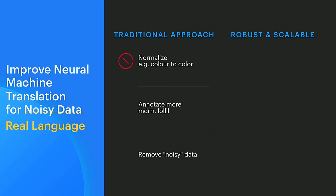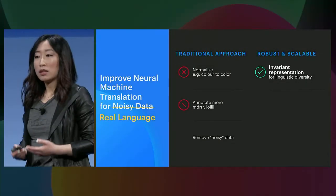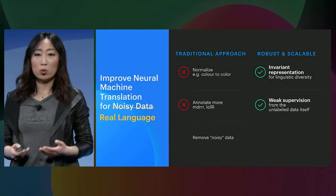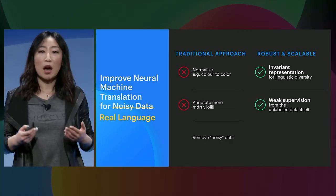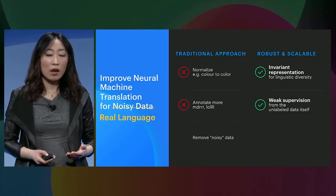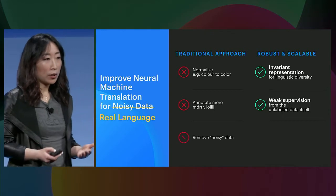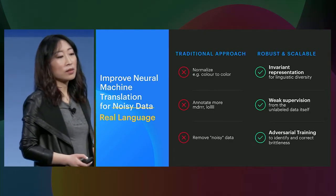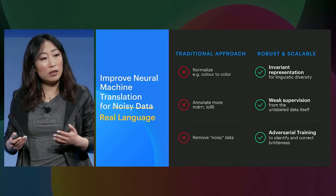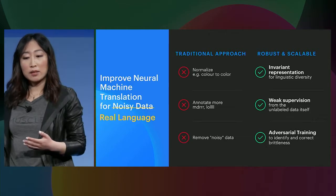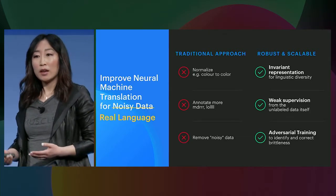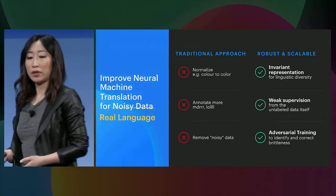Instead of assuming there's a common standard we can normalize to, we focus on learning the underlying invariant representation. Keeping annotating new data is not scalable, so we leverage weakly supervised learning to learn from unlabeled data itself. Finally, we know neural networks are very sensitive to noise, so we proactively identify and correct such weaknesses during training. Let's take a closer look at what each of these means.